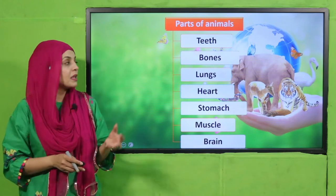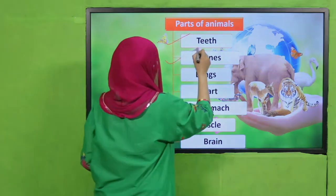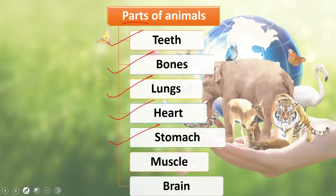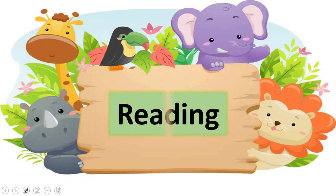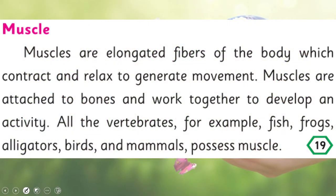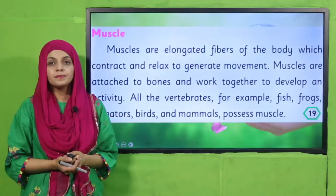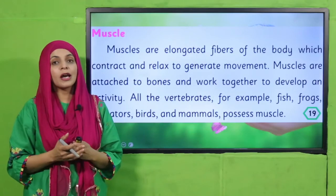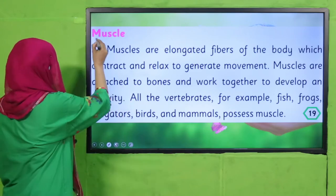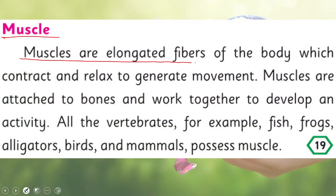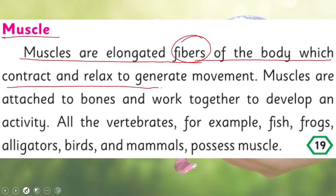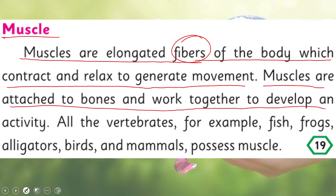The parts of animals include teeth, bones, lungs, heart, and stomach — we have discussed all of these. Today we will talk about muscle and brain. Please open page number 19 in your science textbooks. Muscles are elongated fibers of the body which contract and relax to generate movement. Muscles are attached to bones and work together to develop an activity.